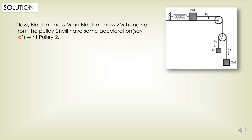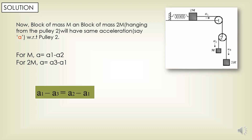The block of mass m and block of mass 2m hanging from pulley 2 will have the same acceleration, say a, with respect to pulley 2. We can write the constraint equations from the figure: for the block of mass m, a equals a1 minus a2; for the block of mass 2m, a equals a3 minus a1. Equating these gives a1 minus a3 equals a2 minus a1, so option D is correct.